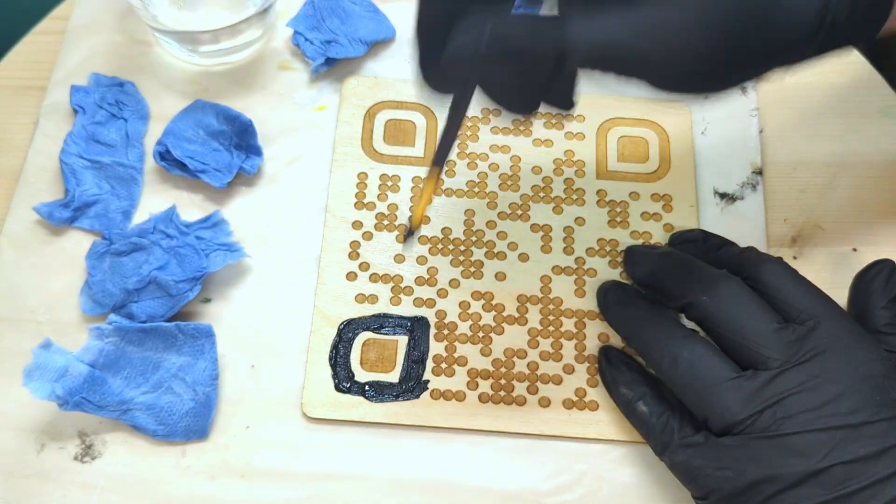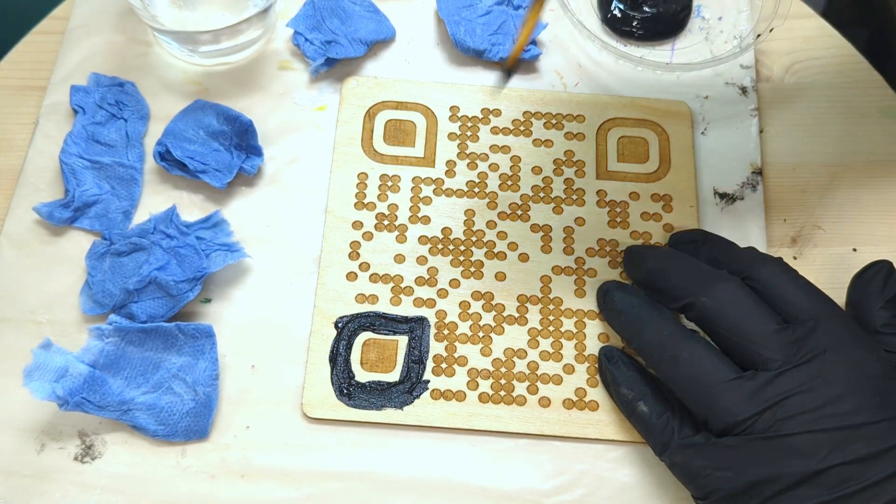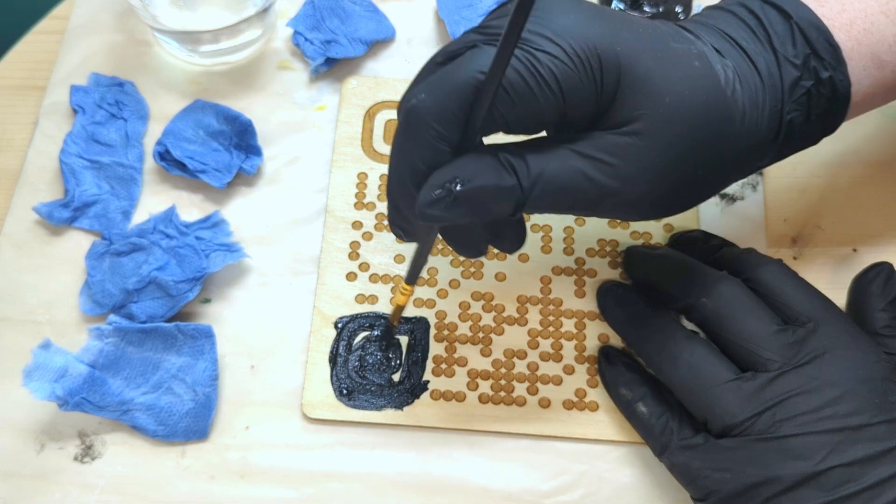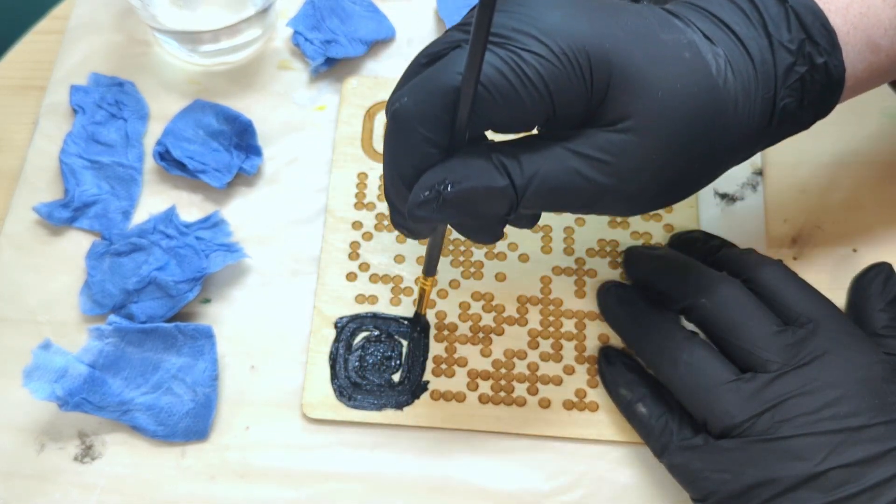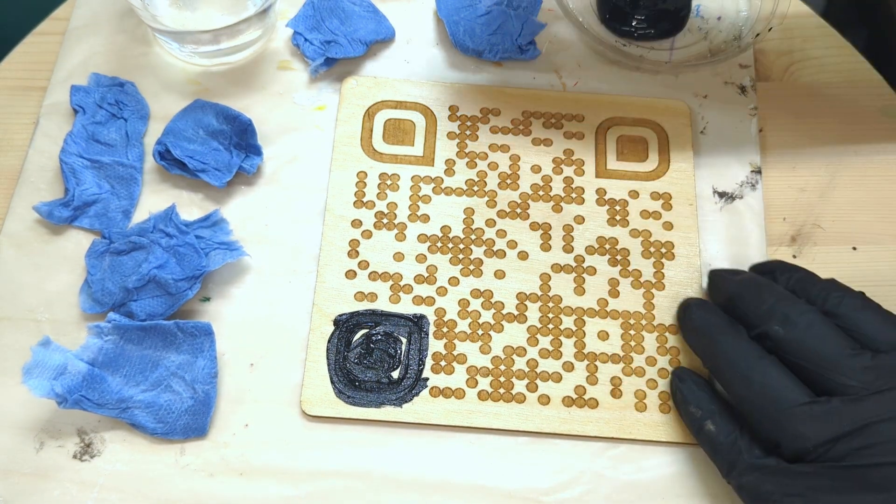In small sections, really work the paint into the engraving. I prefer to use cheap acrylic paint because the water content is higher and it has less pigment, thus it's less likely to stain your wood.